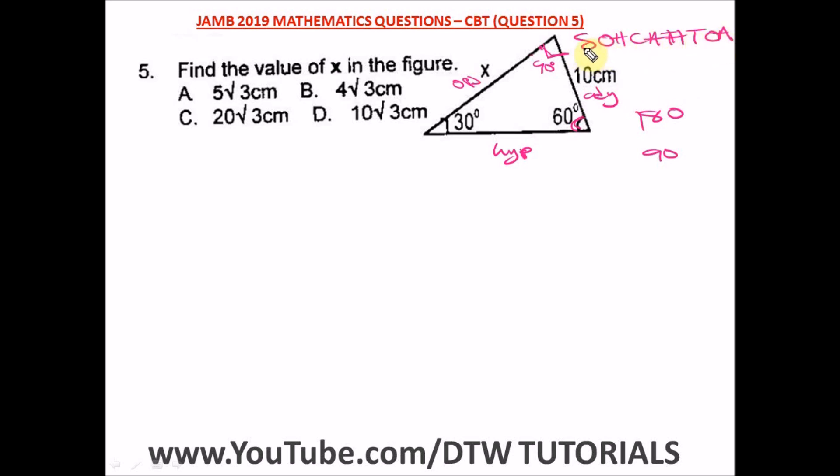Therefore, sine is opposite over hypotenuse, cosine is adjacent over hypotenuse, and tan is opposite over adjacent. So I'm going to use opposite over adjacent, which is tan.